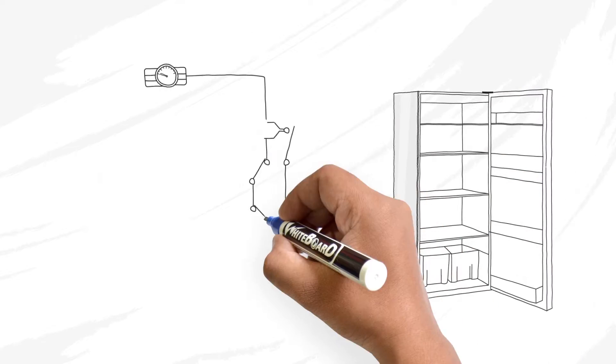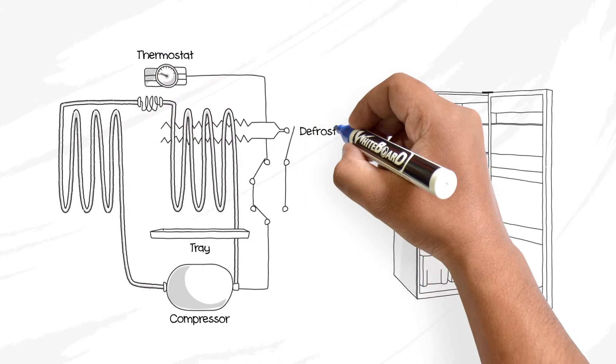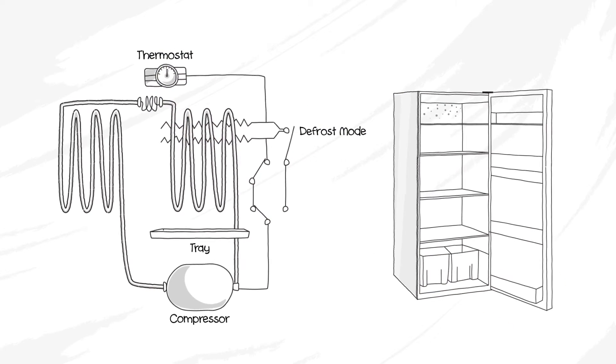Here's how it works. We engineered a hidden evaporator into the back wall and connected it to the thermostat. When refrigerating, you may notice small ice pellets form on the back wall.